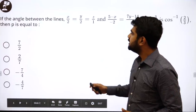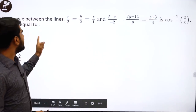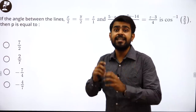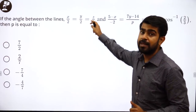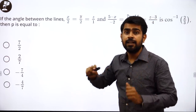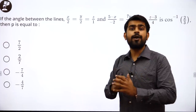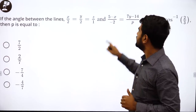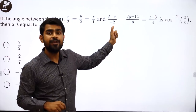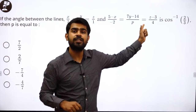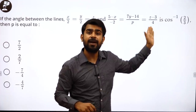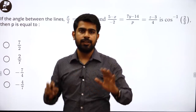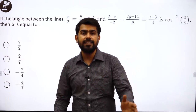The first question asks about the angle between two lines. The first line is x/2 = y/2 = z/1 — the origin lies on this line because (0,0,0) satisfies it. The second line equation is: (5 - x)/(-2) = (7y - 14)/(-p) = (z - 3)/4. The angle between these two lines is given as cos⁻¹(2/3). We need to find the value of p.